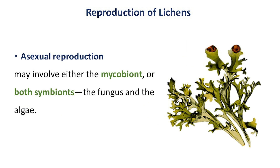Regarding asexual reproduction, lichens have several methods. One method involves only the mycobiont, while another involves both organisms — the fungus and the algae.